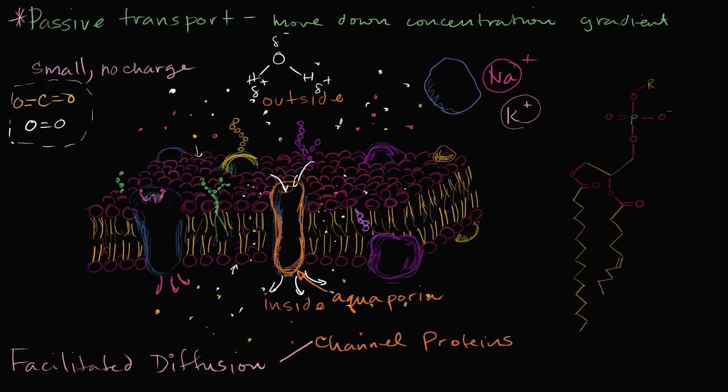Now another type of facilitated diffusion can occur through what we call carrier proteins. Carrier proteins. And I wanna be clear, while I'm gonna talk about carrier proteins, people are still studying exactly how they work. But the view is, let me just draw the membrane here. I'm gonna draw a carrier protein in the membrane. So this is a cross section of my membrane, my phospholipid bilayer here.